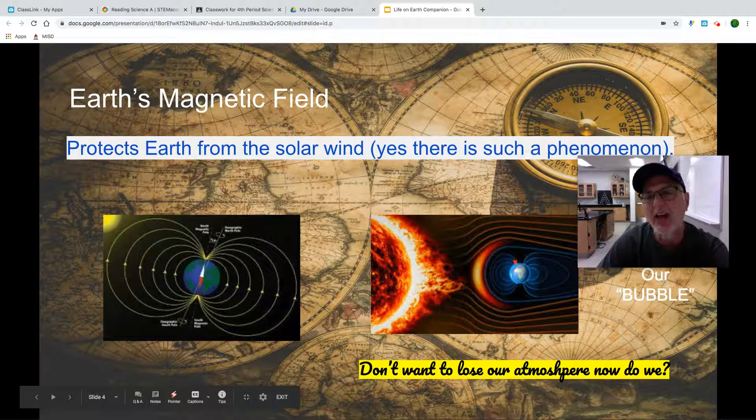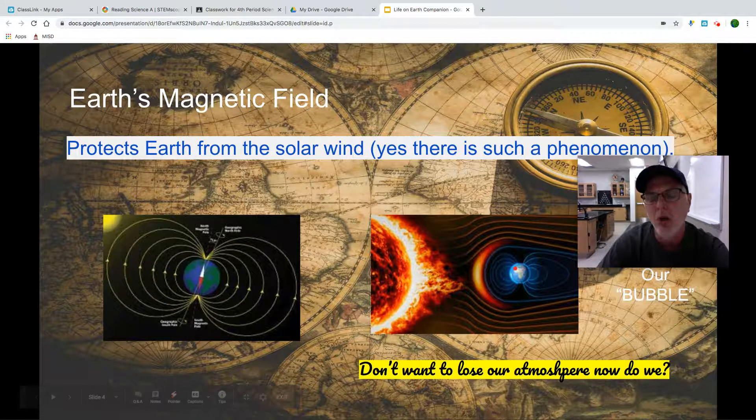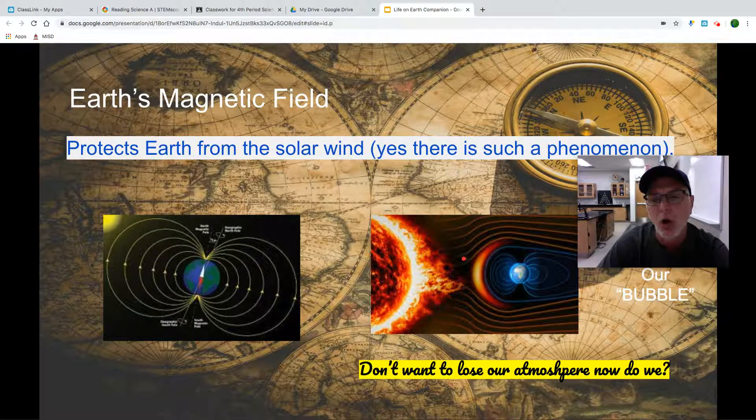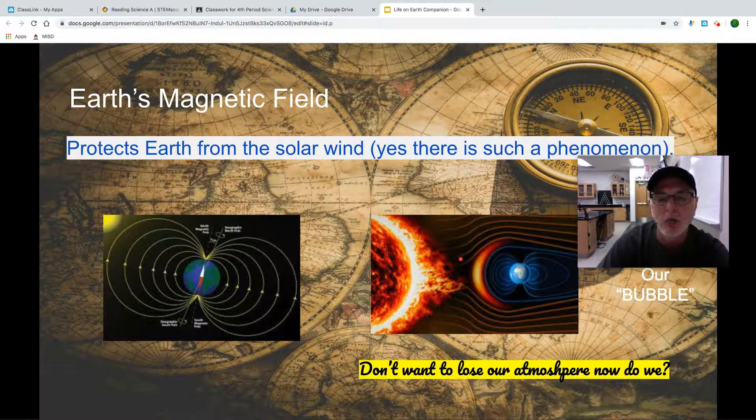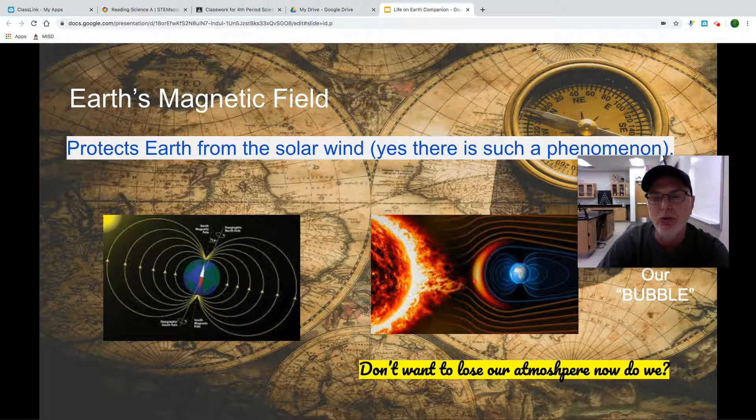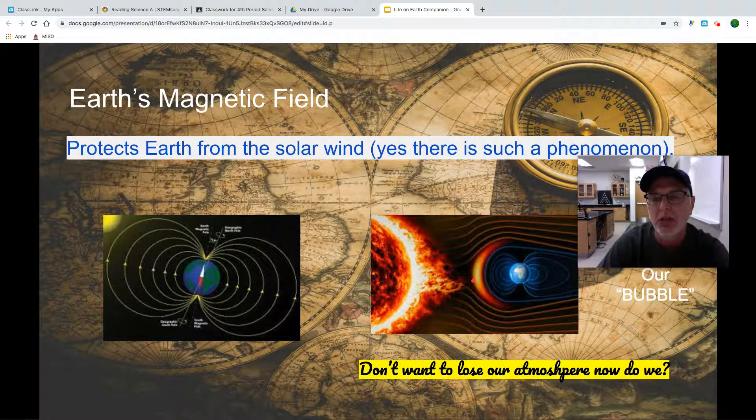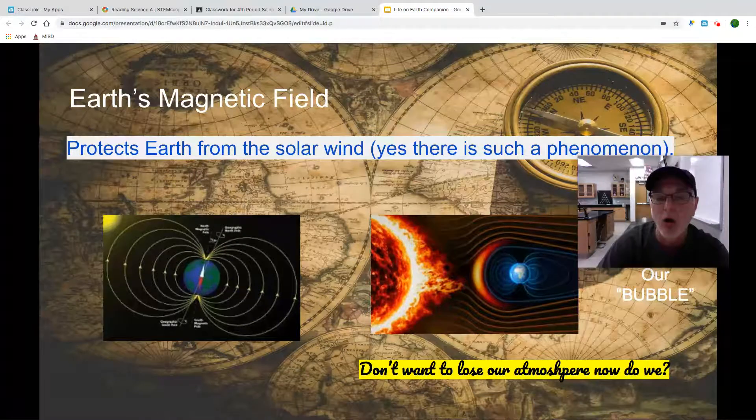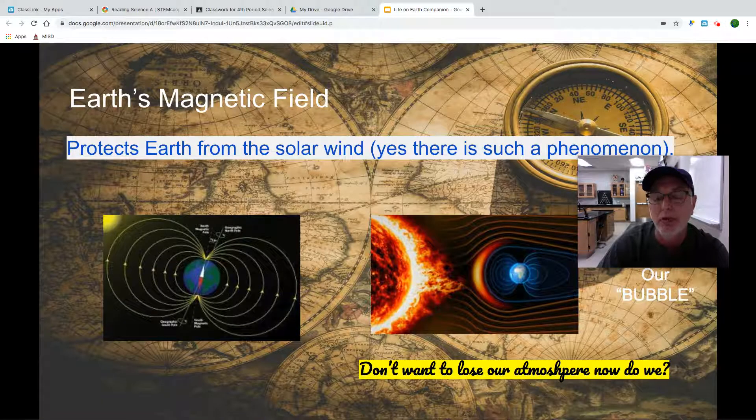If we didn't have a strong magnetic field, the sun's solar wind would literally blow our atmosphere off our planet. They believe that is what has happened to Mars, that Mars once had a better atmosphere. But due to some of its loss of its magnetic field, due to other conditions, the solar wind actually blew its atmosphere off and weakened it to the point that it won't sustain life as we understand it.